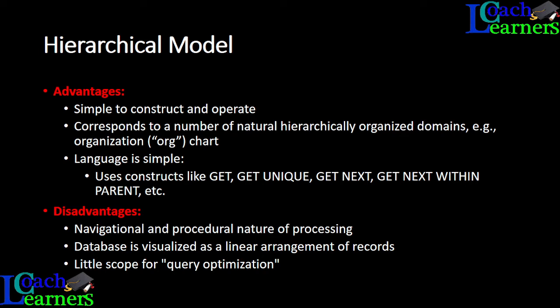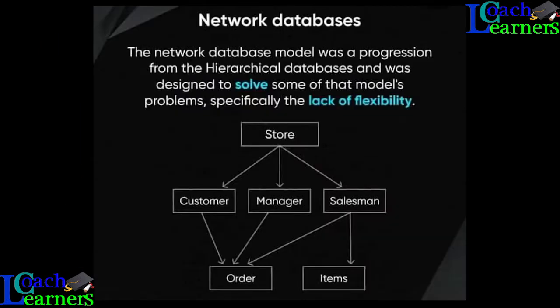The second type is network databases. As you can see from the diagram, the network model was a progression from the hierarchical database, designed to solve problems from the previous model — particularly the lack of flexibility. In hierarchical, data was captured in a linear format, but in the network model we have more flexibility. Most entities have parent and child relationships, and child entities can link to multiple parent entities.